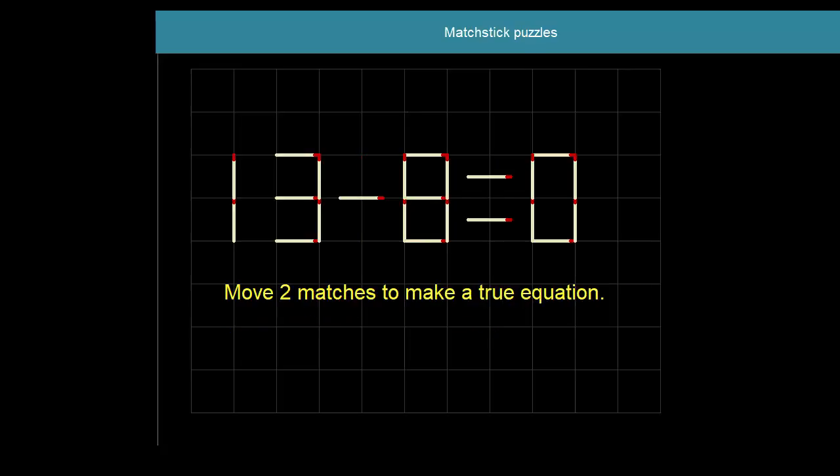Another equation. Again, not true. Thirteen minus eight equals zero. Again, just by moving two matches. Can we make that true? Two matches. Which ones? Let's see.